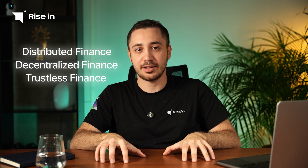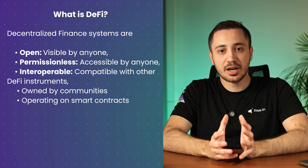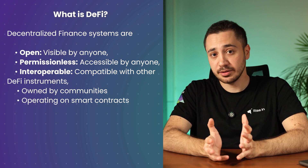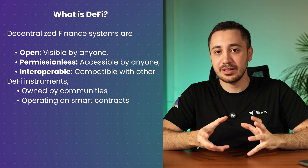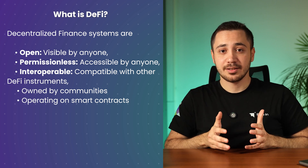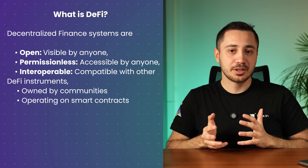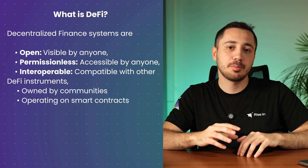We need a name for our distributed and trustless finance system. Is it distributed finance? Trustless finance? No — it's decentralized finance. DeFi. The infrastructure of DeFi is open and visible to anyone, permissionless, accessible by anyone, and interoperable — meaning it's compatible with the other DeFi instruments on the same platform. Most importantly, it's not controlled by anyone but the community itself. This is a system that people own. DeFi is all about putting the power back in your hands.